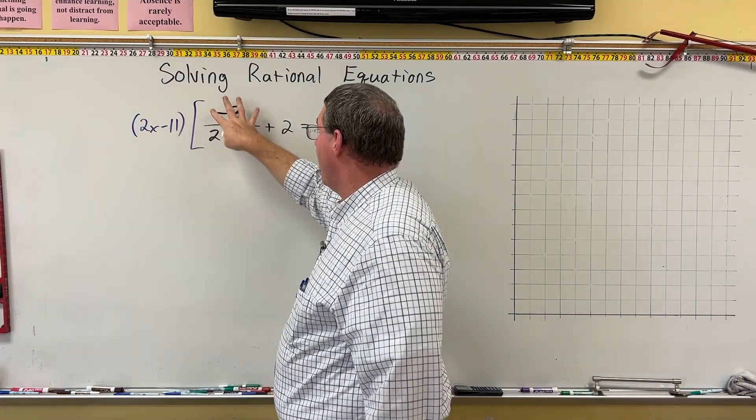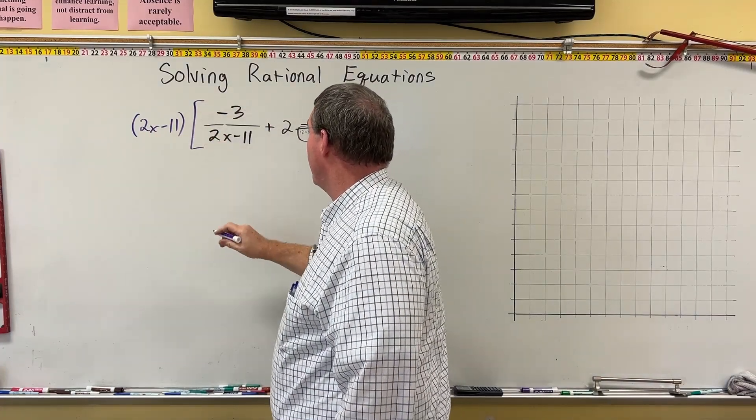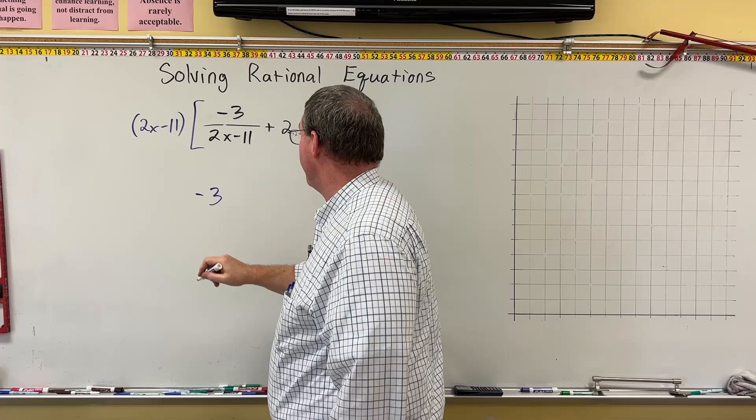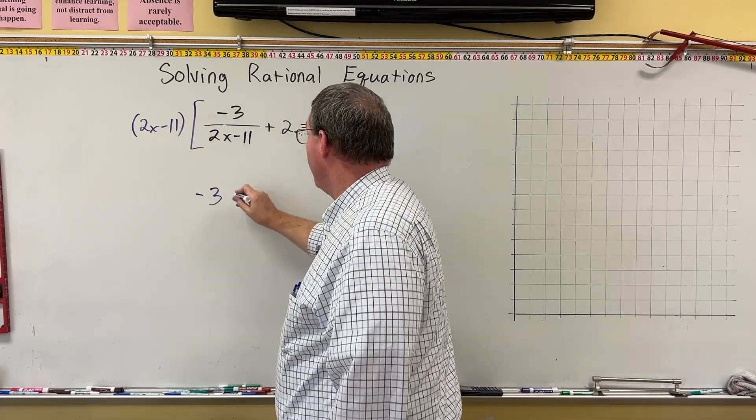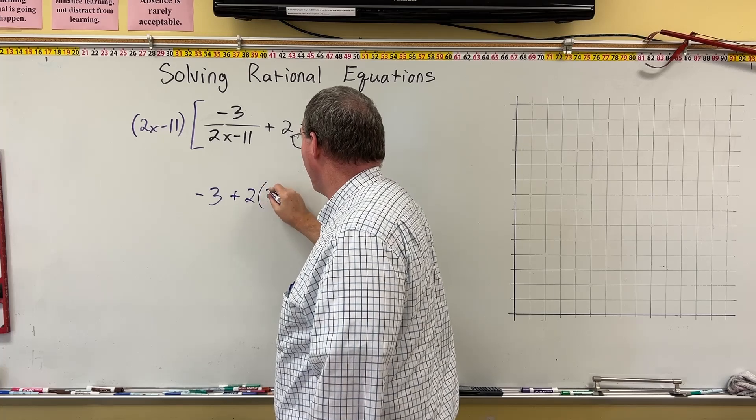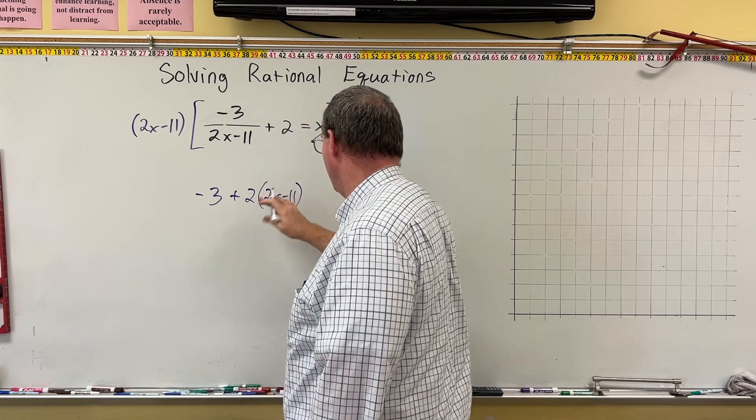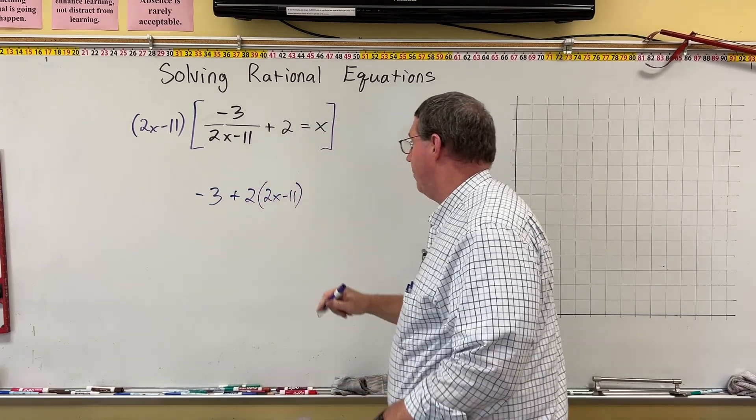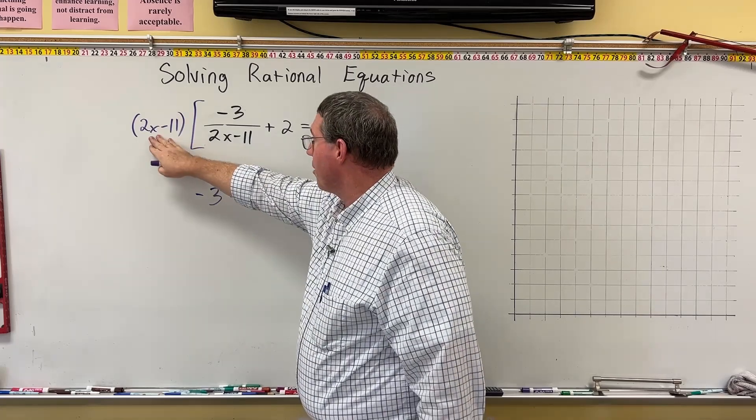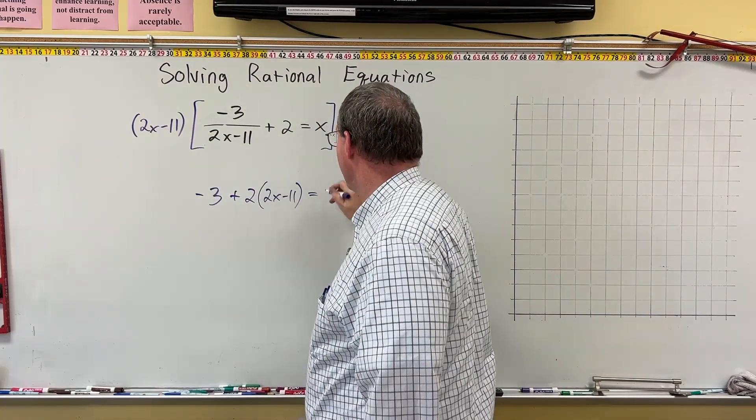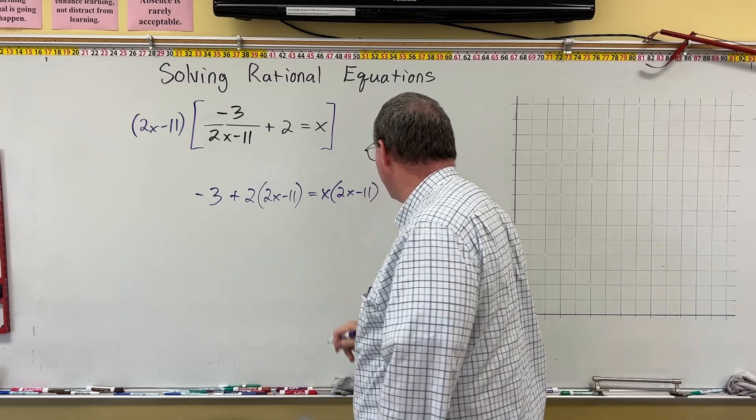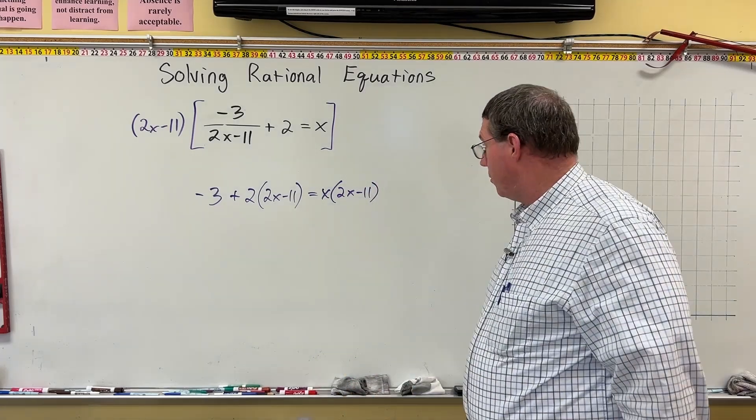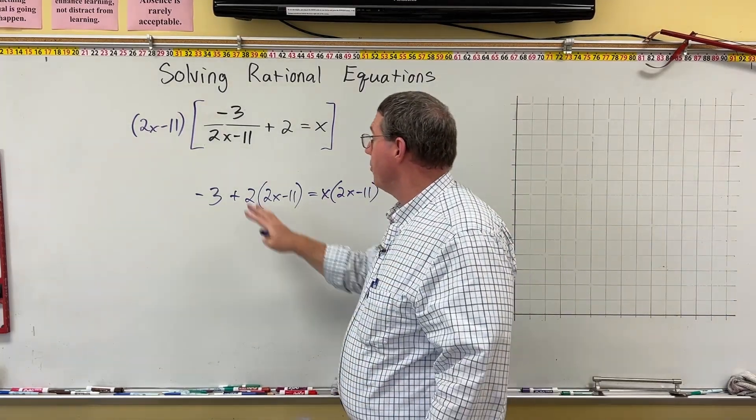2x minus 11 times this fraction cancels the denominator and we have negative 3. Then 2x minus 11 times 2, here's how we're going to write it. We're just going to say 2 times 2x minus 11. We'll distribute in just a little bit. Equals 2x minus 11 times x, which is going to be x times 2x minus 11. In just a minute, we're going to distribute. Okay, all right, so we've canceled the denominator.